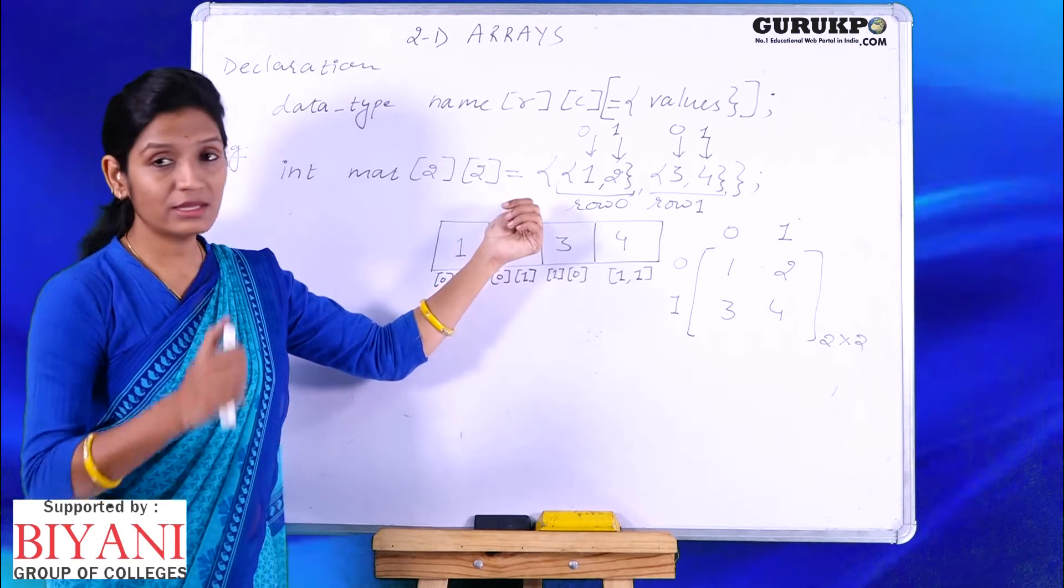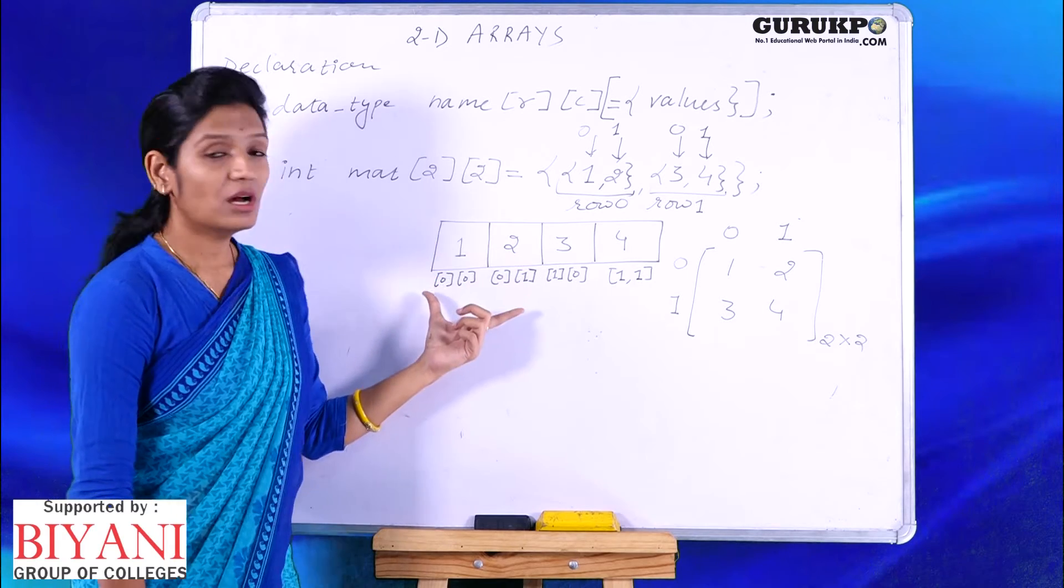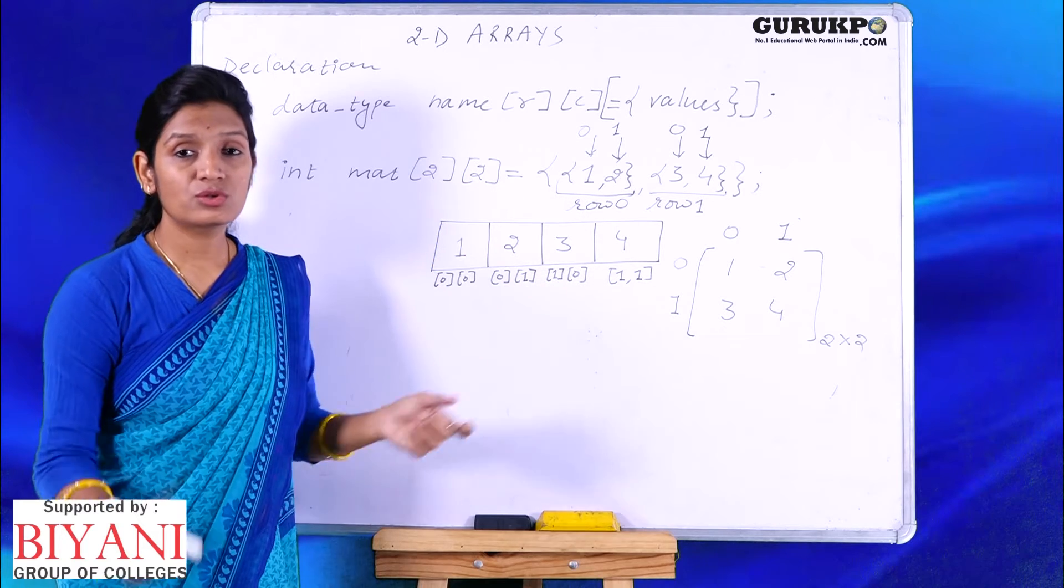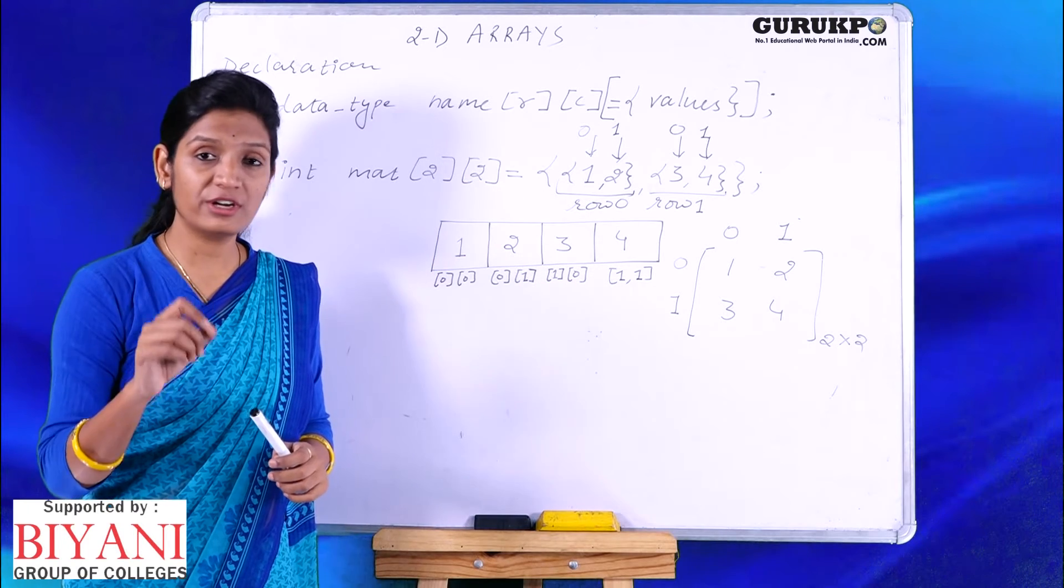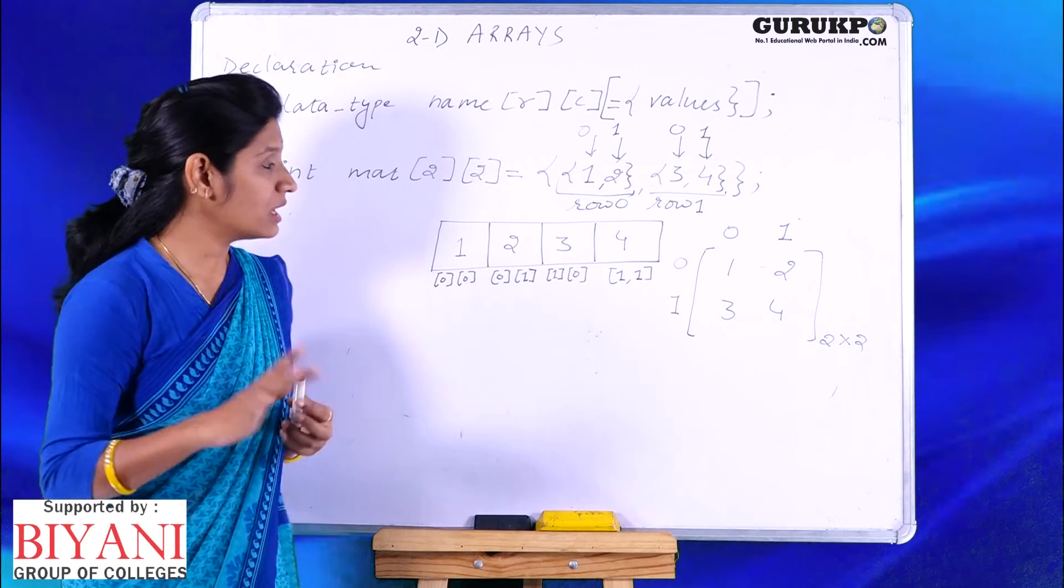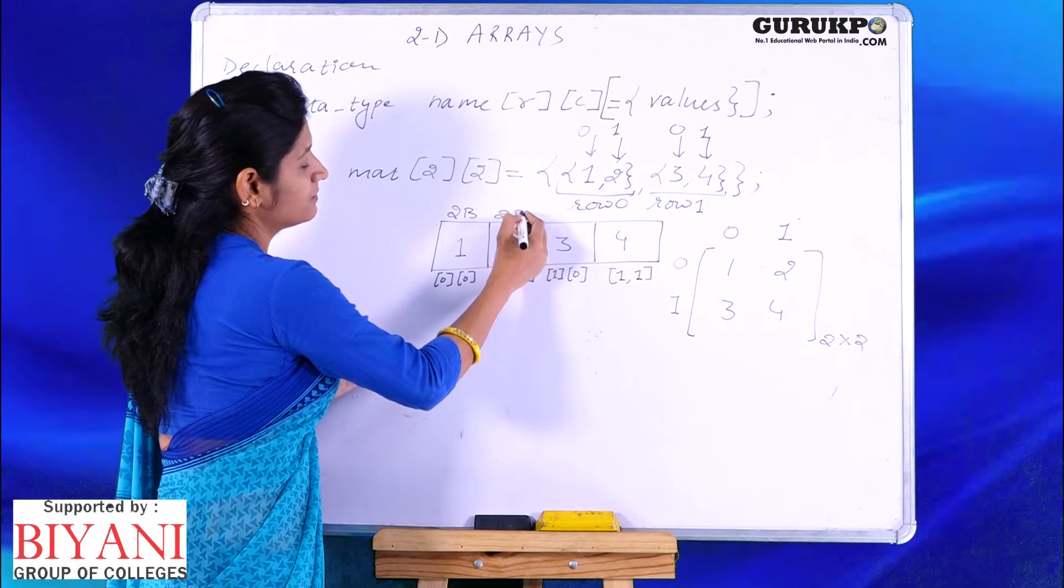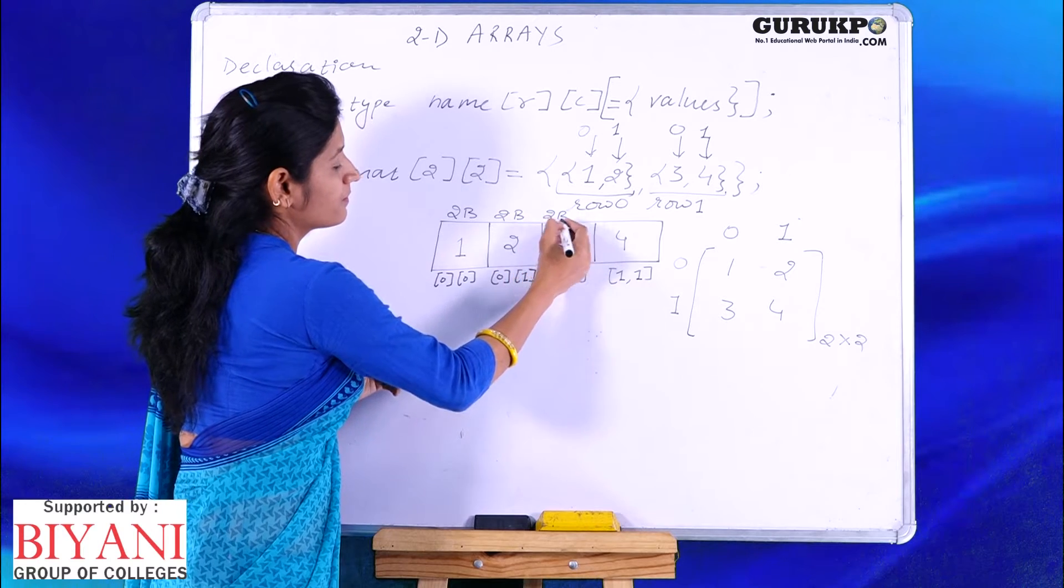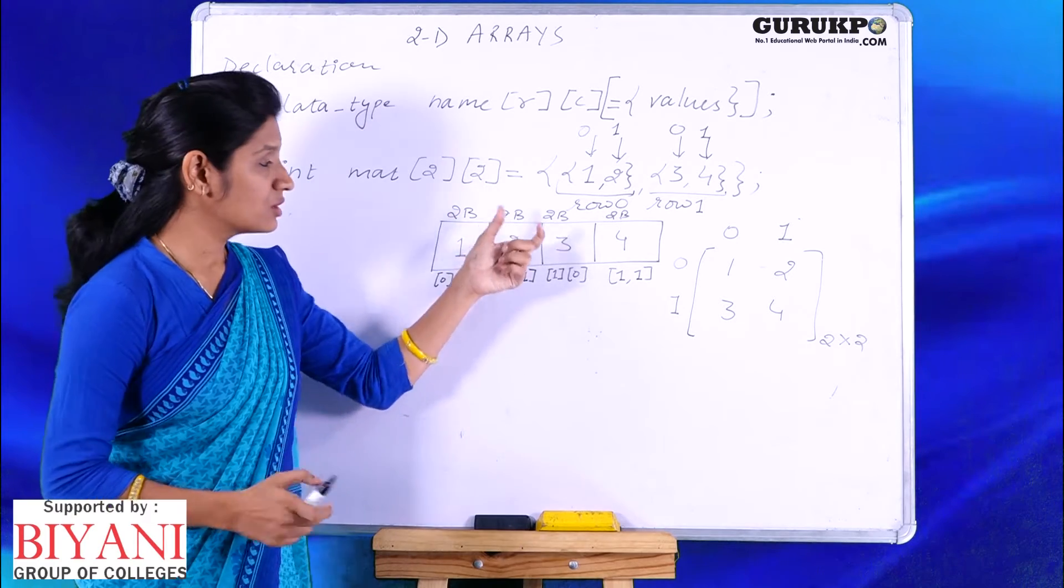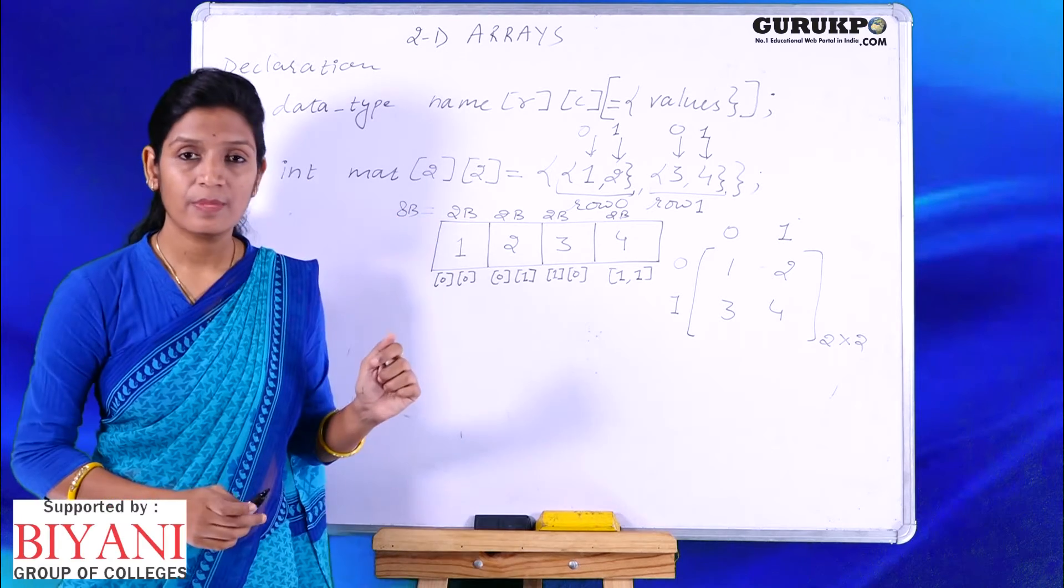Let us see, after declaring this type of array, when it gets executed what actually happens. A memory will be allotted. Total number of elements is what? 2 by 2 is 4 number of elements. Each element is of integer type, 2 bytes will be reserved for each element, so 4 times 2, 8 bytes will be reserved. This one block is representing 2 bytes. This individual block is of 2 bytes each, so they all make it 8 bytes.